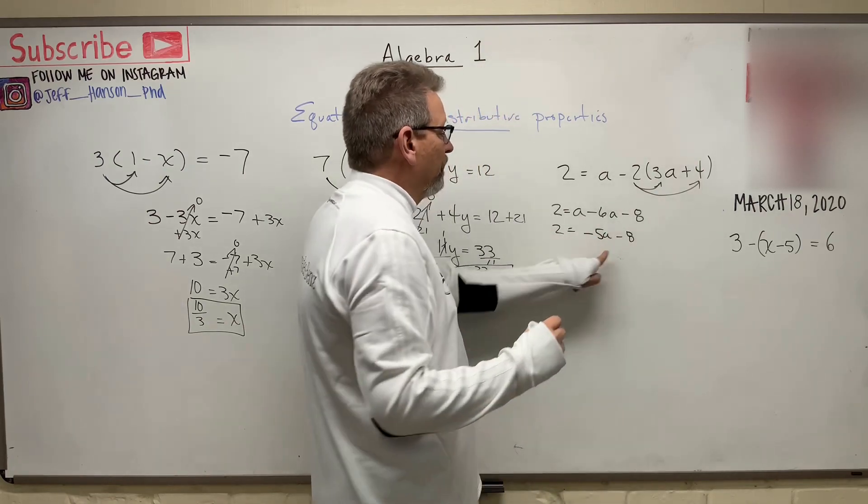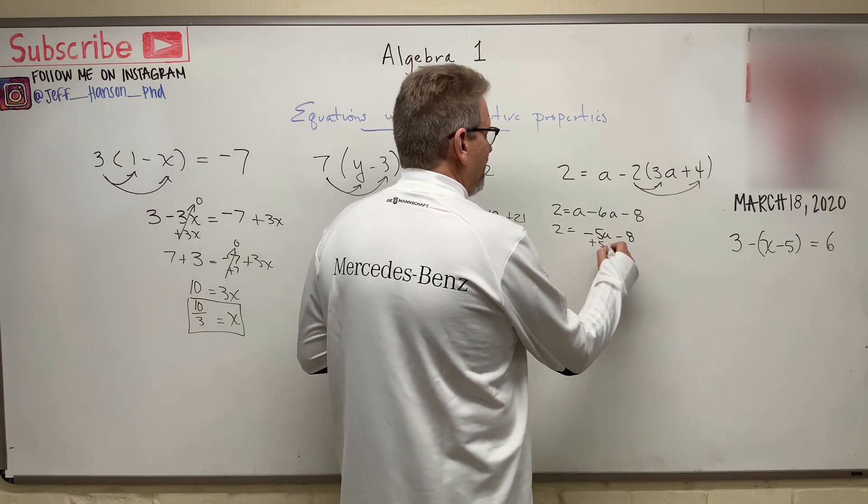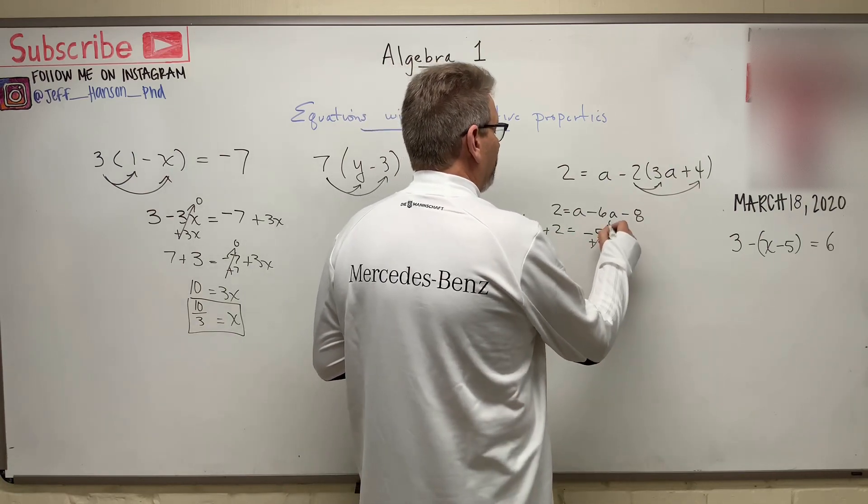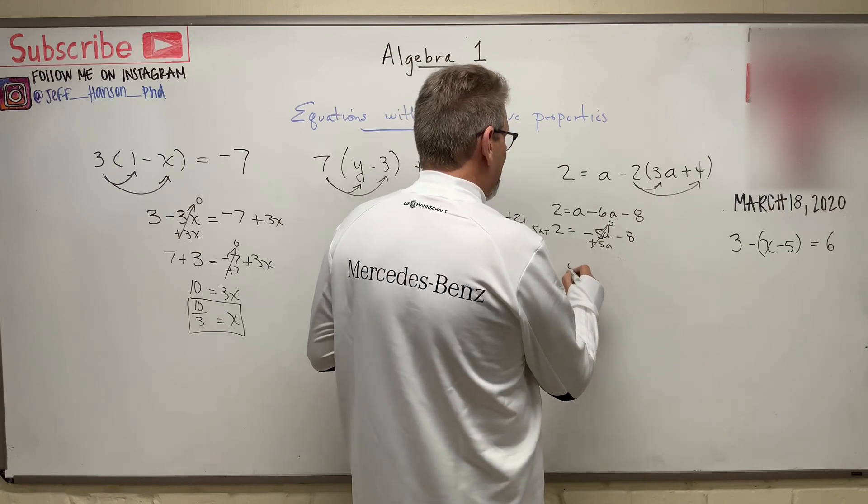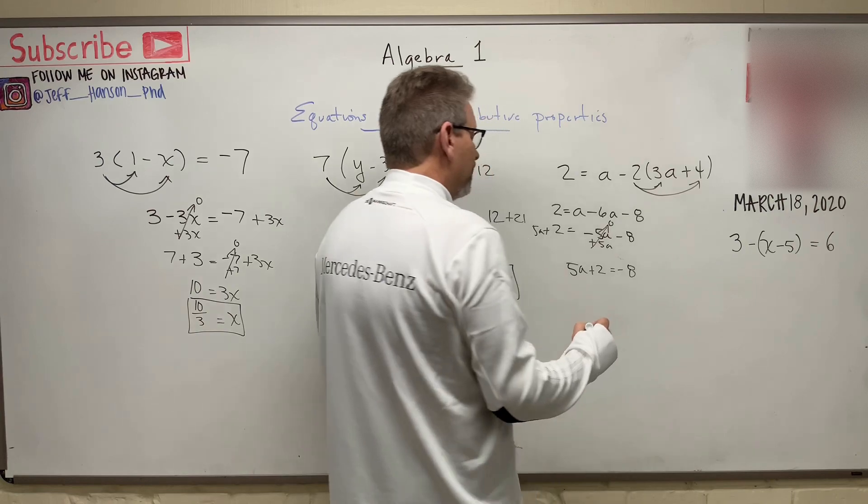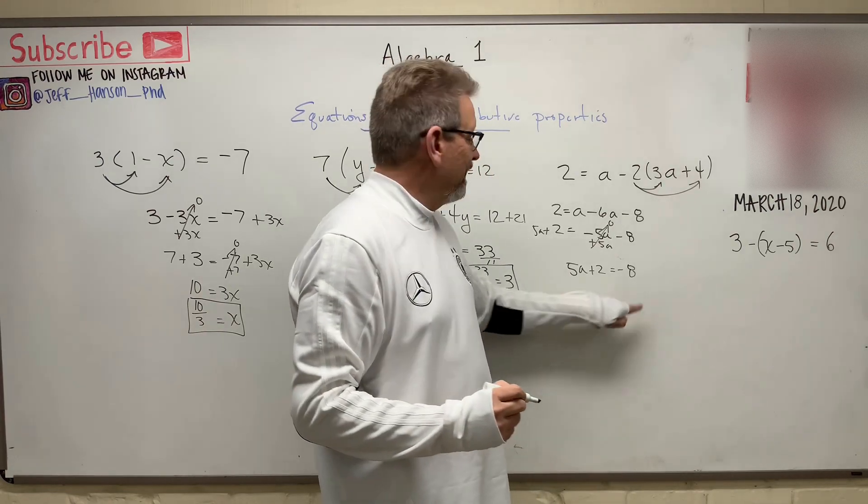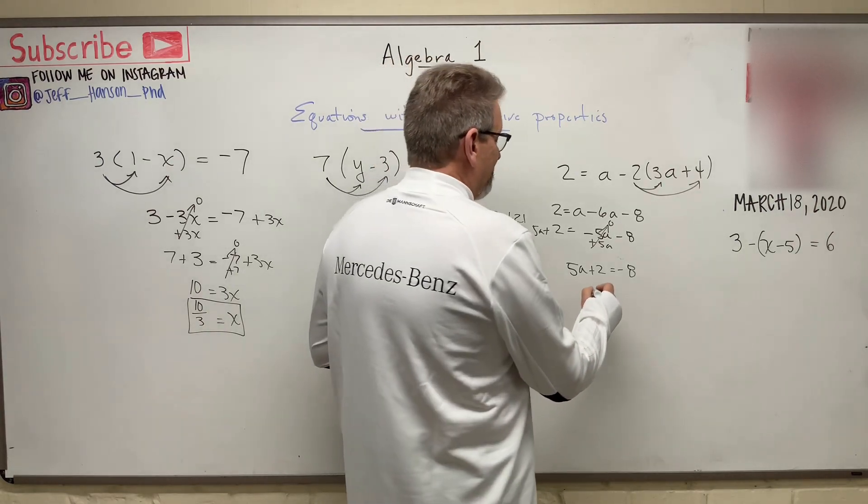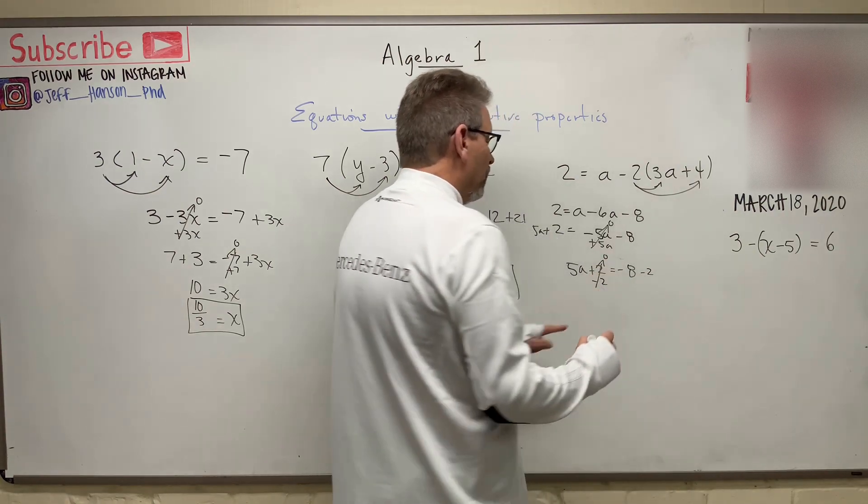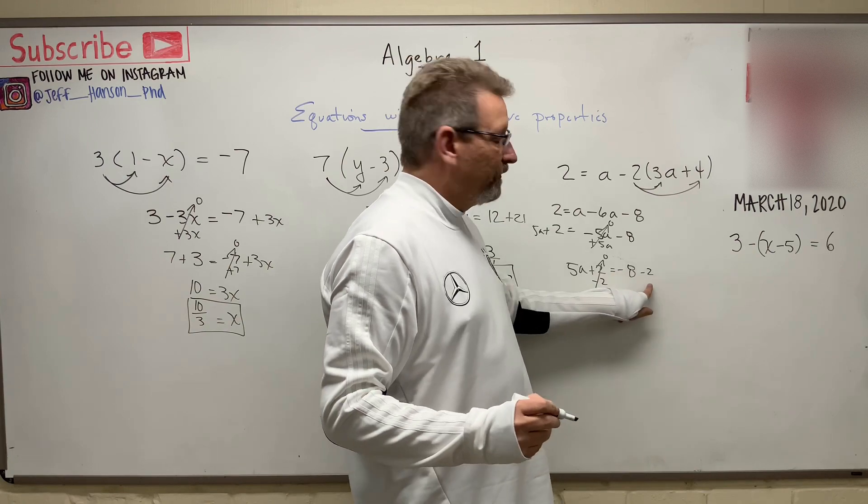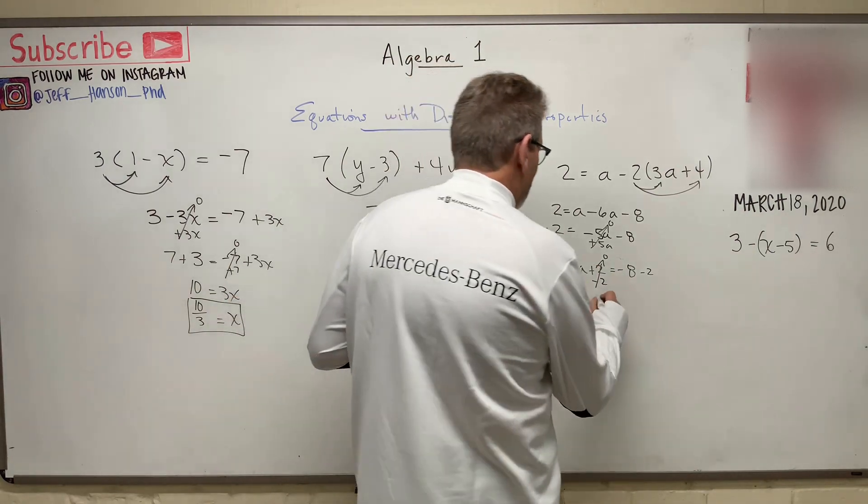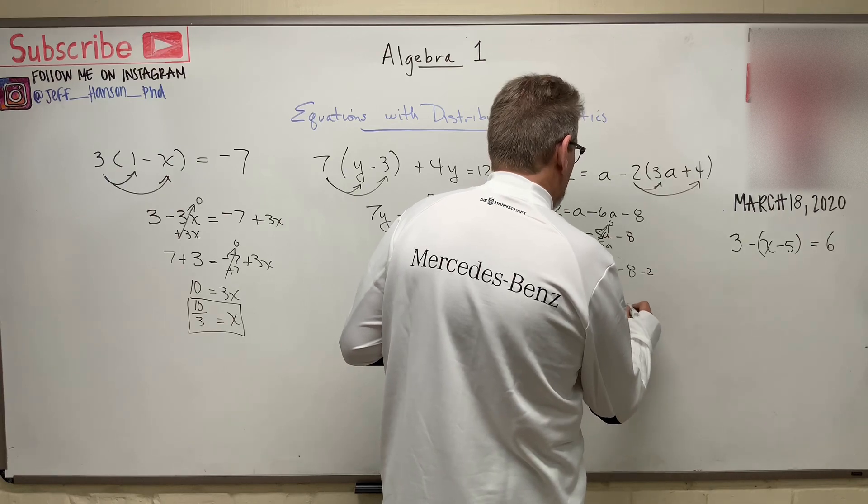Now, again, I'm going to move this to the other side. So I'm going to add 5a, add 5a. That goes to zero. And so now I have 5a plus 2 equals minus 8. Let's move the 2 to the other side. I'm going to subtract 2 from this side, subtract 2 from that side. That goes to zero. And a negative number plus another negative number makes an even bigger negative number.